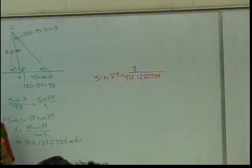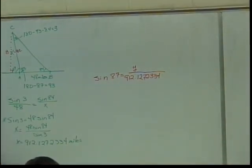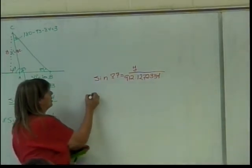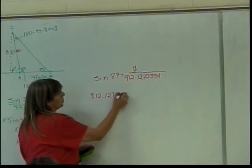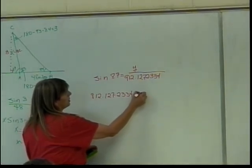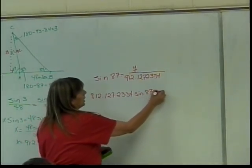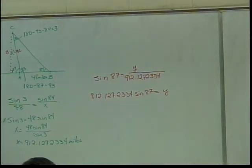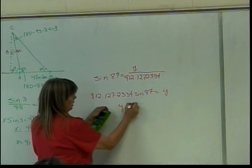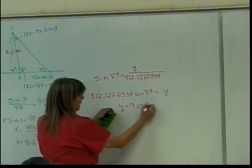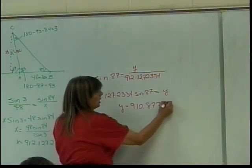To solve that, I multiply the sine of 87 by 912.1272334. So 912.1272334 times the sine of 87 gives me y. I find out that y is equal to 910.8771984 miles.